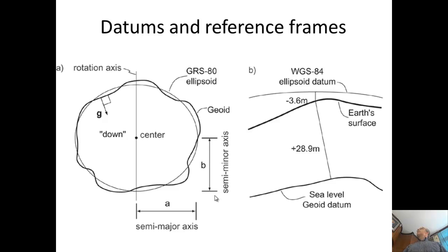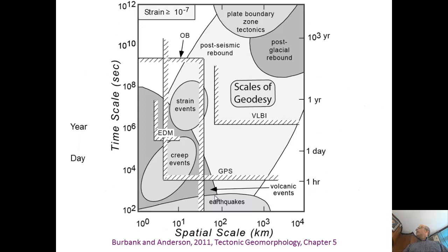We have to think about data with a reference frame. When we look at GPS vectors, we ask: relative to what? When discussing vertical motion, we need to know the datum — the shape of the Earth we're comparing to — and how sea level changes over time. This figure shows spatial scale from 1 to 10,000 kilometers versus time scale, covering phenomena like creep events, earthquakes, post-seismic rebound, and plate tectonics.